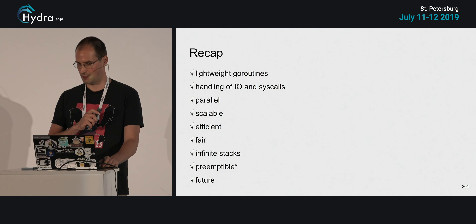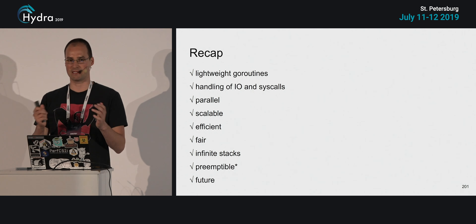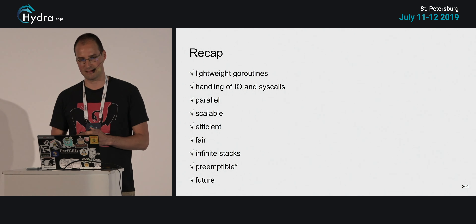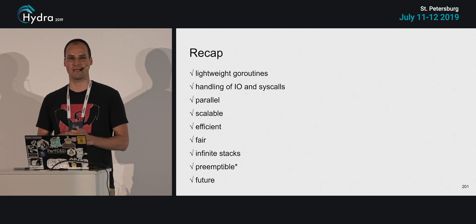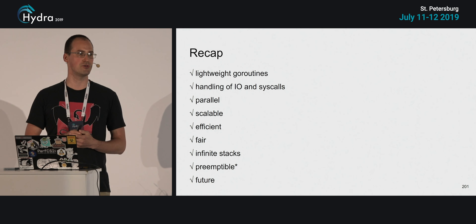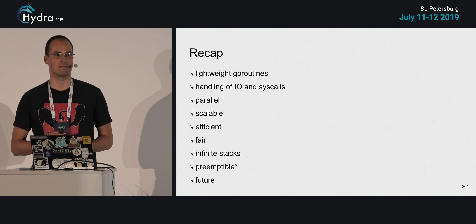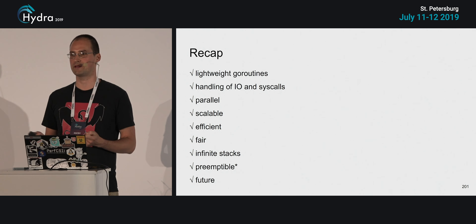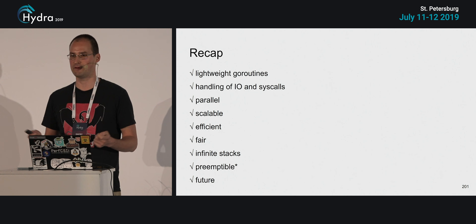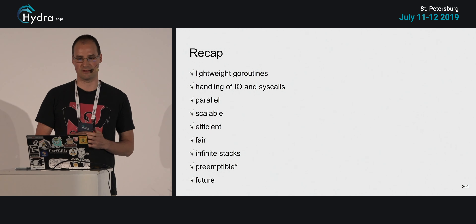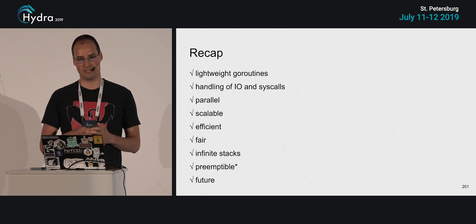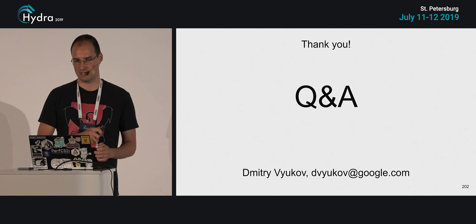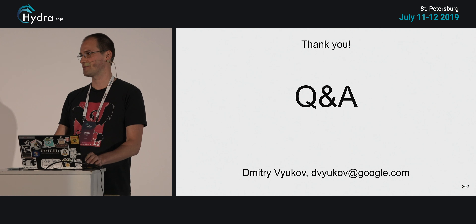To recap: we implemented lightweight GoRoutines by splitting them into two entities. We handle I/O and system calls efficiently. We have a parallel scheduler, a scalable scheduler via state distribution, and an efficient scheduler via the processor entity. We ensured the scheduler is fair. We implemented infinite stacks using growable continuous stacks, and implemented near-preemptible execution at very low cost. That's it — thank you. I'm ready for questions.